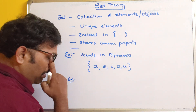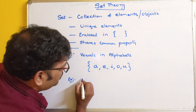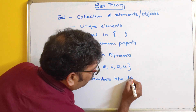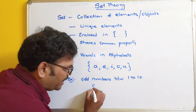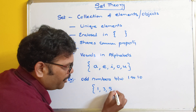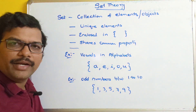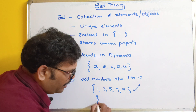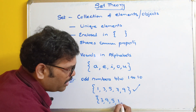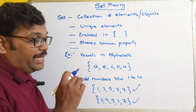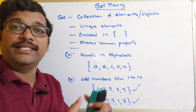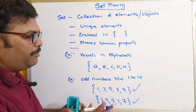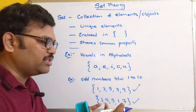Let's take one more example: odd numbers between 1 to 10. That can be {1, 3, 5, 7, 9}. We could also write them as {3, 9, 5, 1, 7} — this is also correct. This implies that the elements don't need to be in ascending or descending order; the order doesn't matter. They are simply a collection of elements enclosed in curly braces.